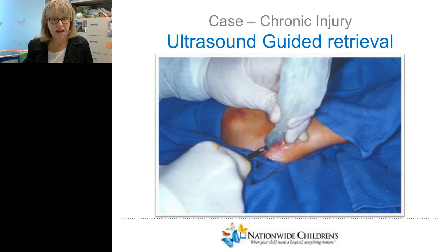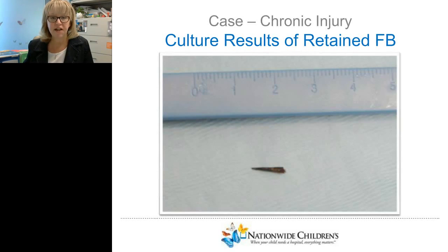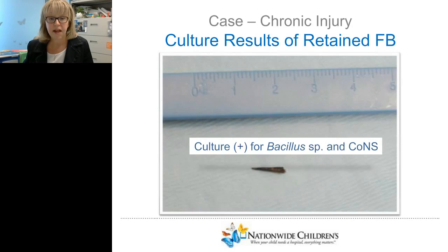Using ultrasound covered in a sheath, they imaged into the tissues to find the object and remove it with instruments. You can see an image of forceps going in to grab the thorn — a three-millimeter foreign body found at the base of her toe that had been there for months. Here it is retrieved: it looks small, but it had poked into her bone and caused a bone infection. It grew Bacillus species and coagulase-negative staph. In these cases we feel it is worthwhile to culture the object because it's been inside the tissues for a long time.